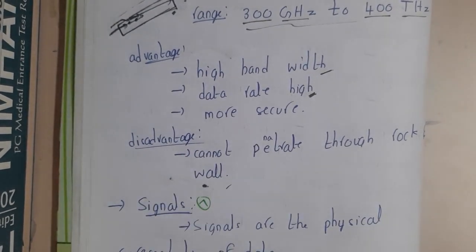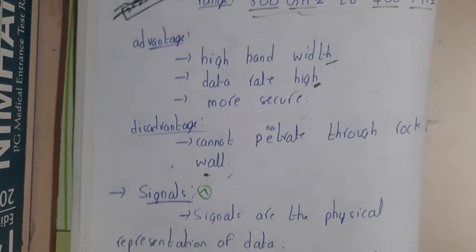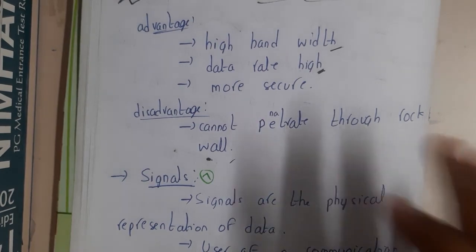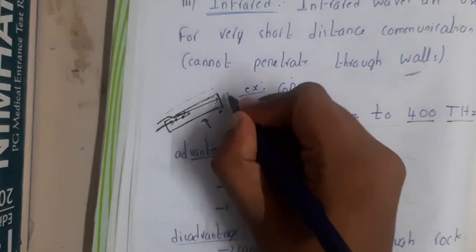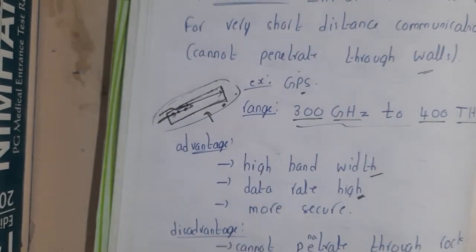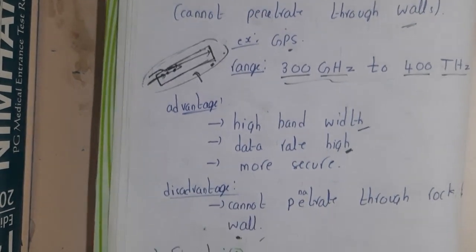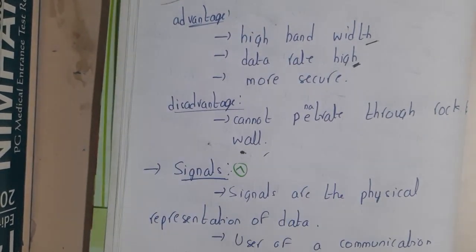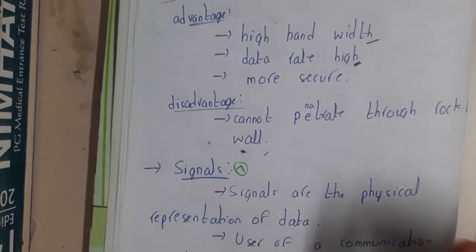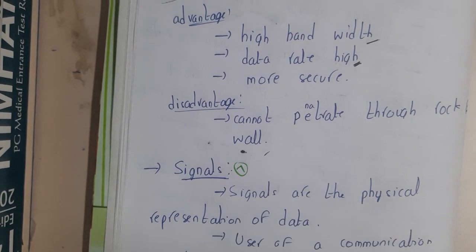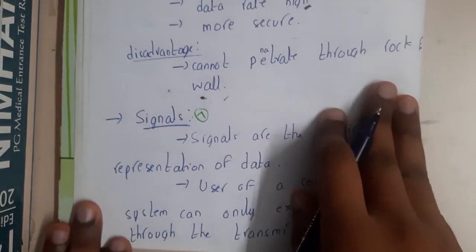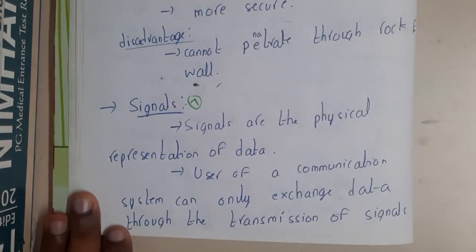The major disadvantage of infrared is that it cannot penetrate walls or rocks. You can observe this yourself next time you go below a flyover or any kind of bridge. I hope everyone got a basic idea. In the next lecture, we will be discussing signals and types of signals. Thank you for watching.